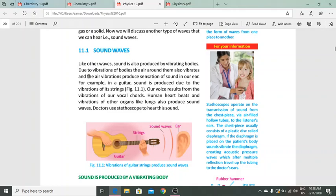The air around them also vibrates and the air vibration produces sensation of sound in our ears. Bodies ki vibration se air bhi vibrate karti hai, which produces sound sensations. For example, in a guitar, sound is produced due to the vibration of its strings. Our voice results from the vibration of our vocal cords.